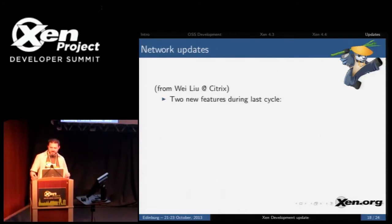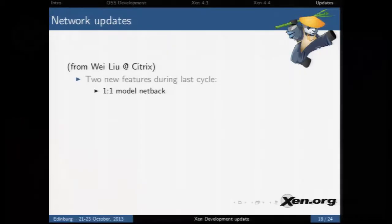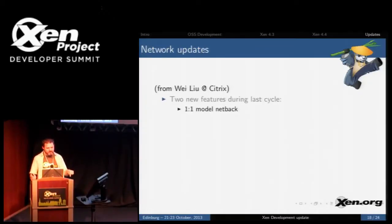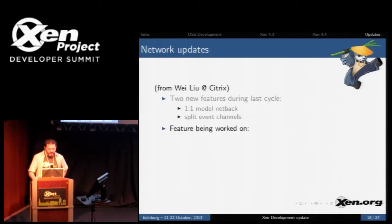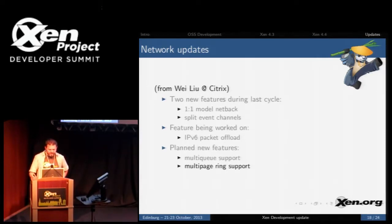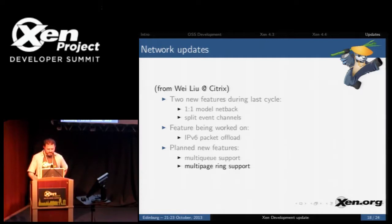Network updates: rather than having one thread per vCPU, we're going to have one thread per vif, which is more scalable and flexible. Split event channels: one event channel for TX and one for RX. Features currently being worked on include IPv6 packet offload. New features planned include multi-queue support and multi-page ring support, which should allow a deeper pipeline. If you have more questions about what these things mean, talk to Wei.